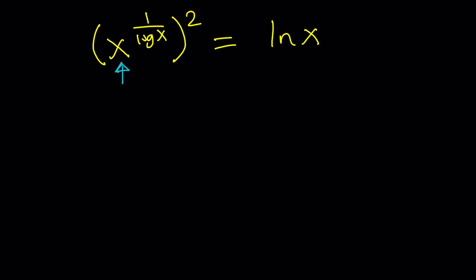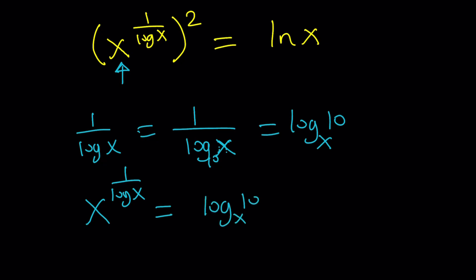So 1 over log x is basically 1 over log x with base 10. And then that can be written as log 10 with base x. So x to the power 1 over log x turns into log 10 with base x to the power... actually it's the other way around, never mind. x should be at the base. So in other words, this turns into x to the power 1 over log x, which is log 10 with base x, right? Okay.